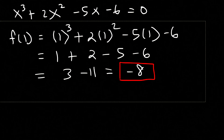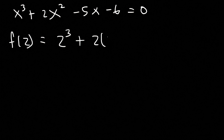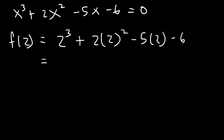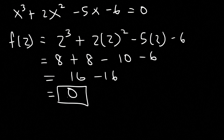Now let's see if 2 is one of the zeros. f(2) = 2³ + 2(2²) - 5(2) - 6. 2 to the third power is 8, 2 squared is 4 times 2 is 8, 5 times 2 is 10. 8 + 8 = 16, and -10 - 6 = -16. So 16 - 16 = 0. f(2) equals 0, which means x = 2 is one of the three zeros.